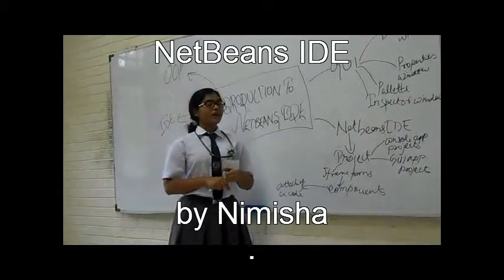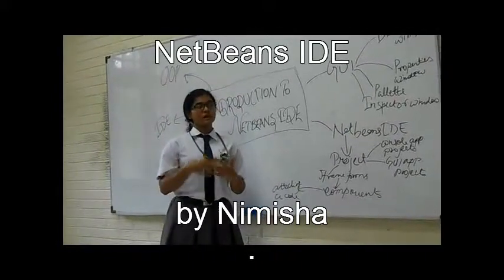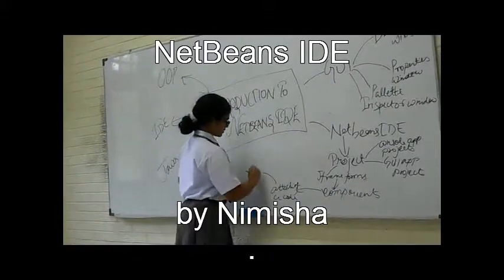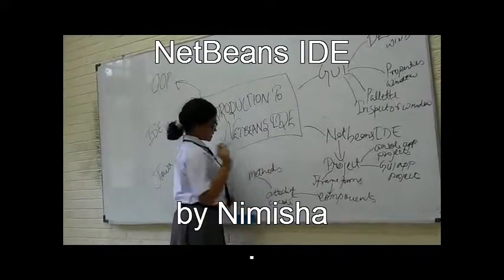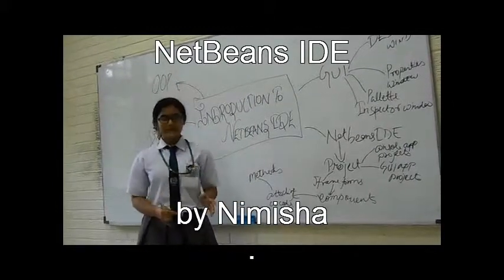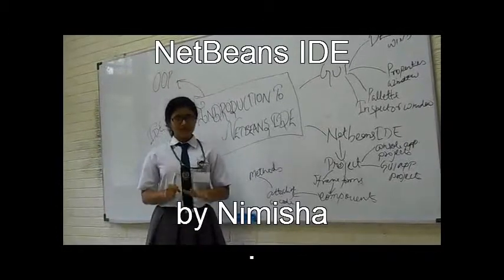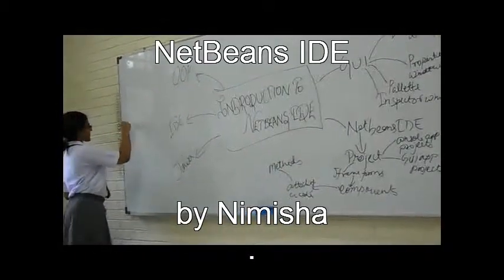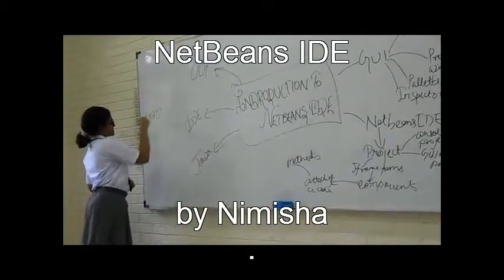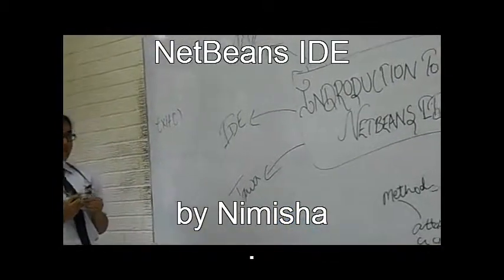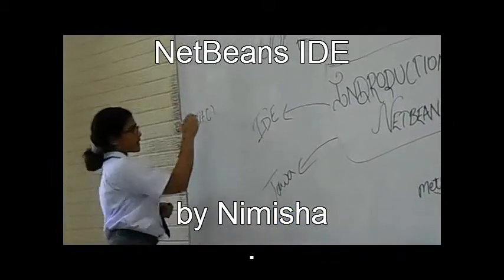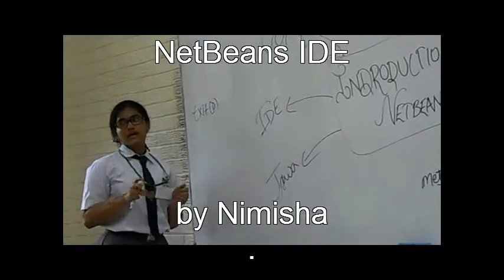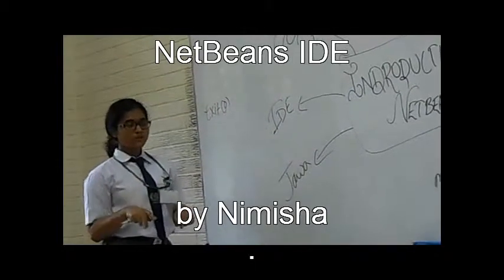Methods are used to make an object perform an action. There are many kinds of methods and I'll be explaining some of them. The first is the exit method. The syntax is system.exit(0). When you attach it to a component and run it and click on the component, it terminates the program.